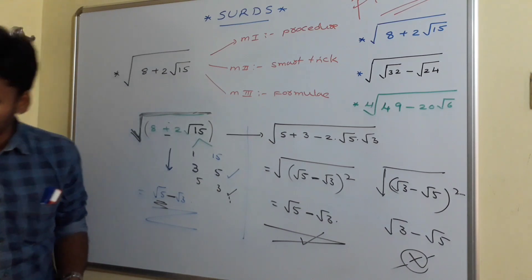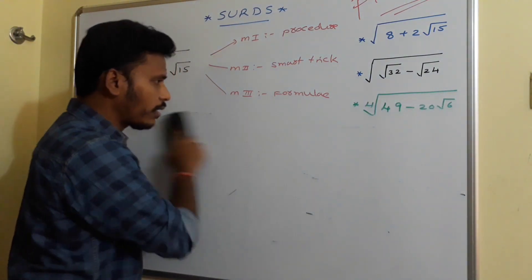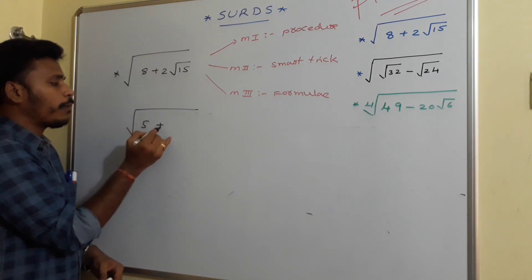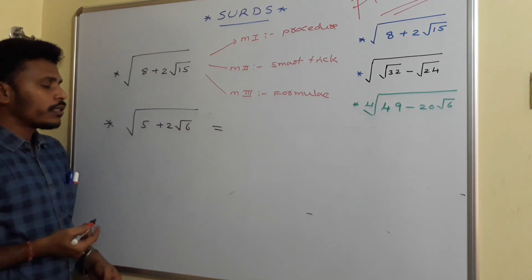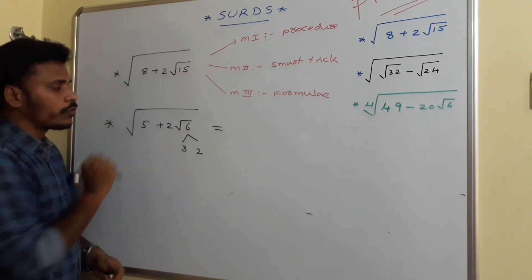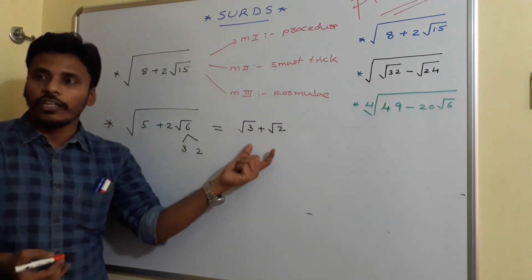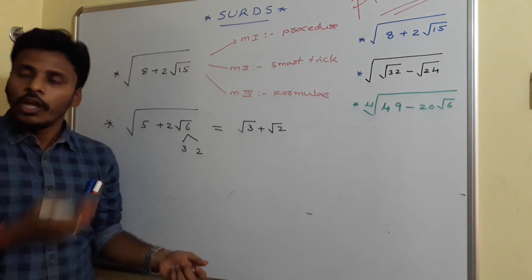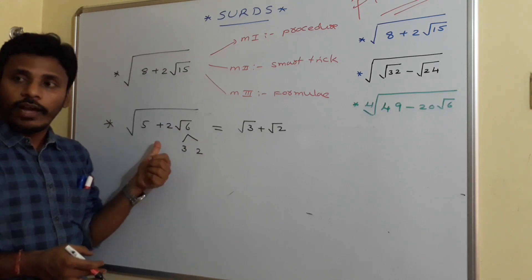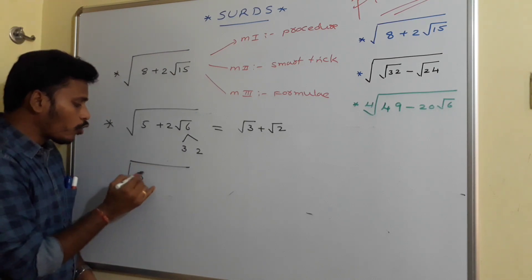Let's look at more examples. For square root of 5 plus 2 root 6: think about 6, split as 3 times 2. Product of 3 and 2 is 6, and sum of 3 and 2 is 5. So directly the answer is root 3 plus root 2. For square root of 5 minus 2 root 6: same pair, 3 and 2, so the answer is root 3 minus root 2.